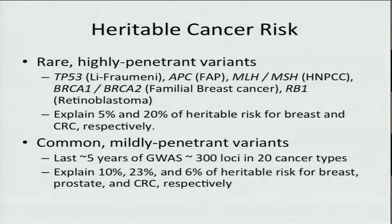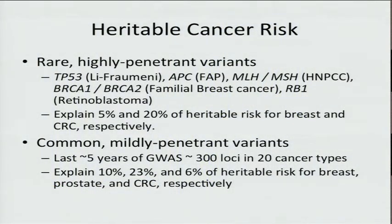More recently, the emergence of genome-wide association studies examining common SNP variation in case-control cohorts have yielded a host of loci in both cancer and non-cancer disease analyses. Over the last five years, there have been a number of cancer GWASs that have yielded over 300 loci in over 20 cancer types. Together, these loci can explain as much as 10, 23, and 6 percent of the heritable risk for breast, prostate, and colorectal cancer, respectively.